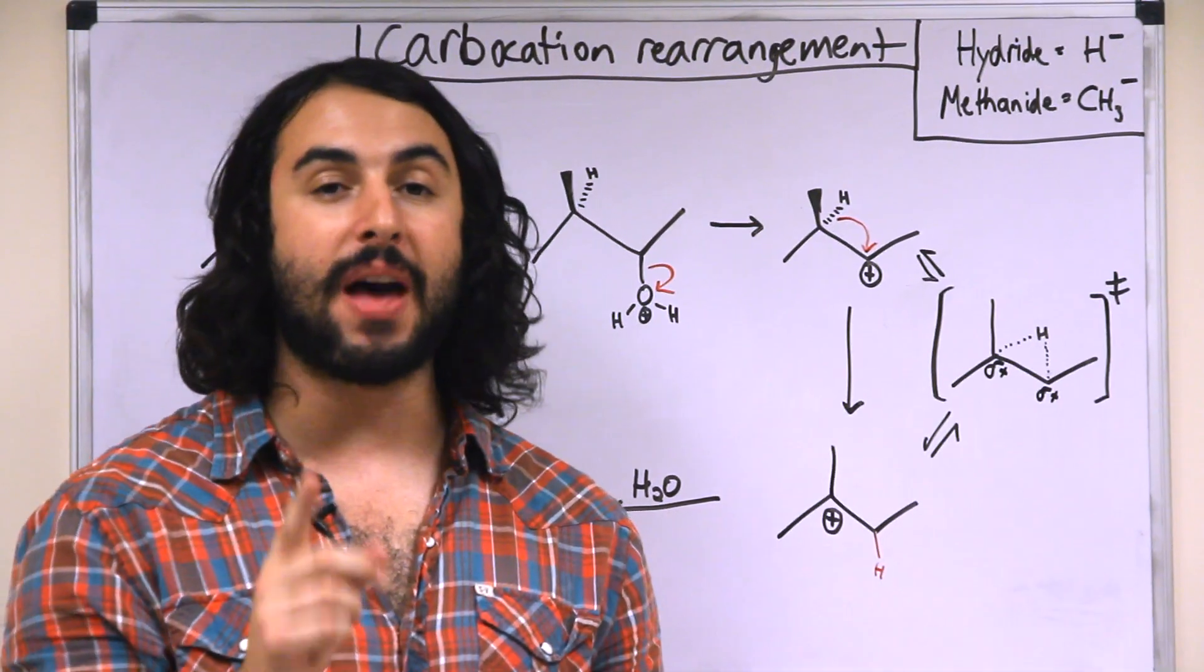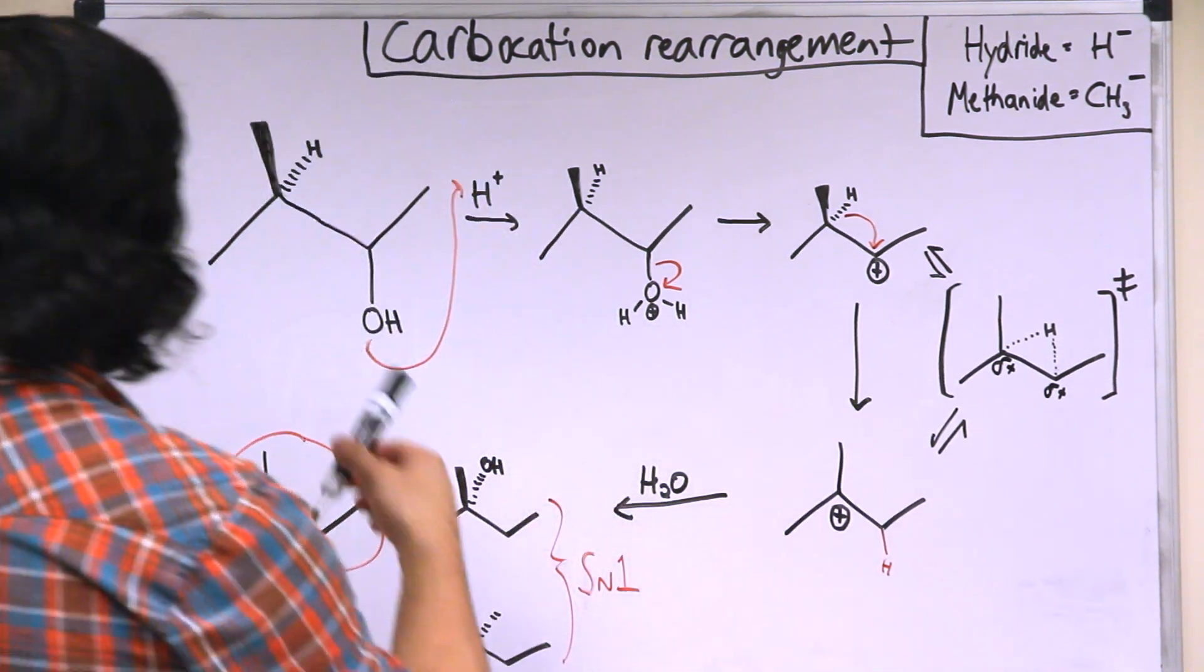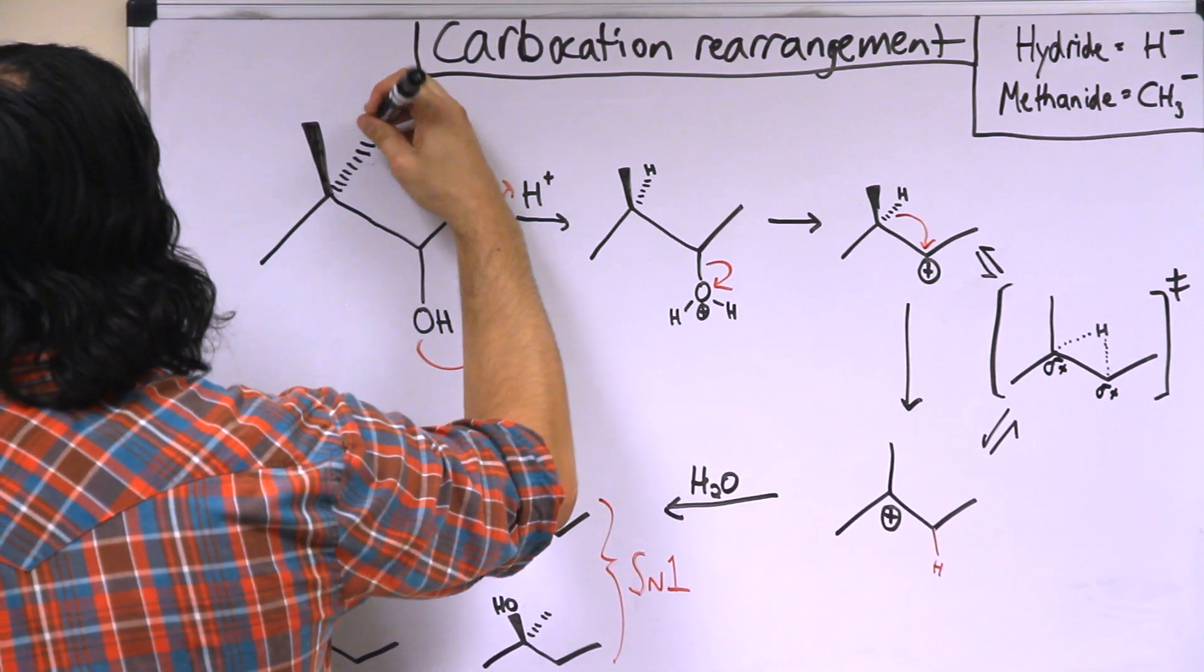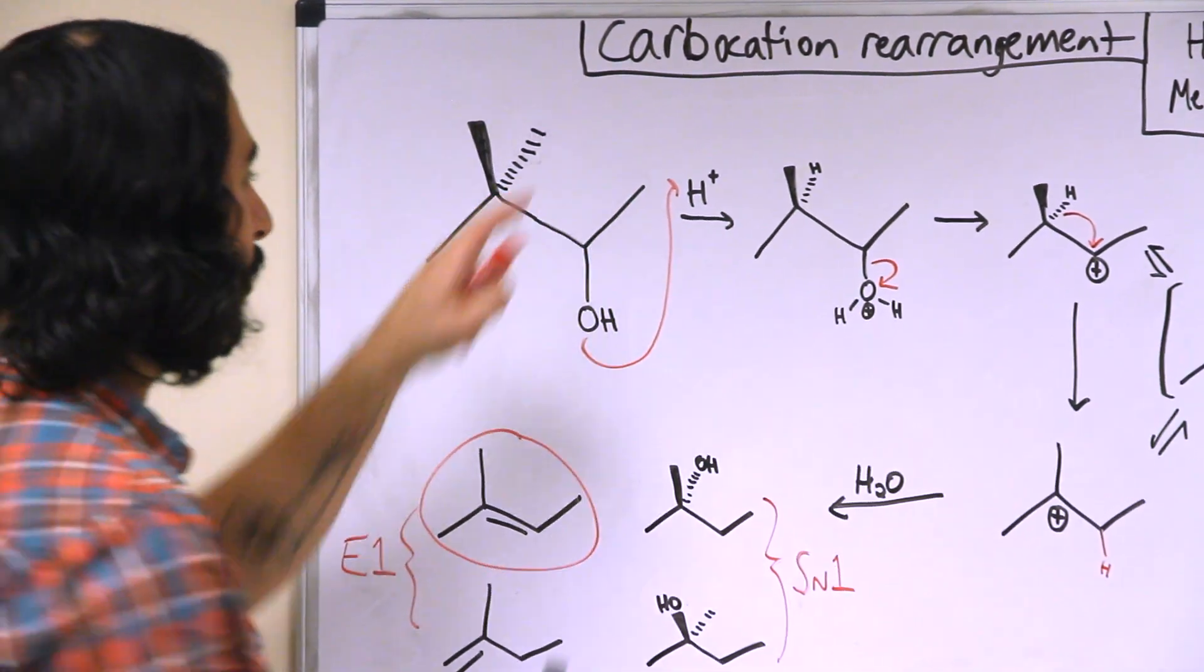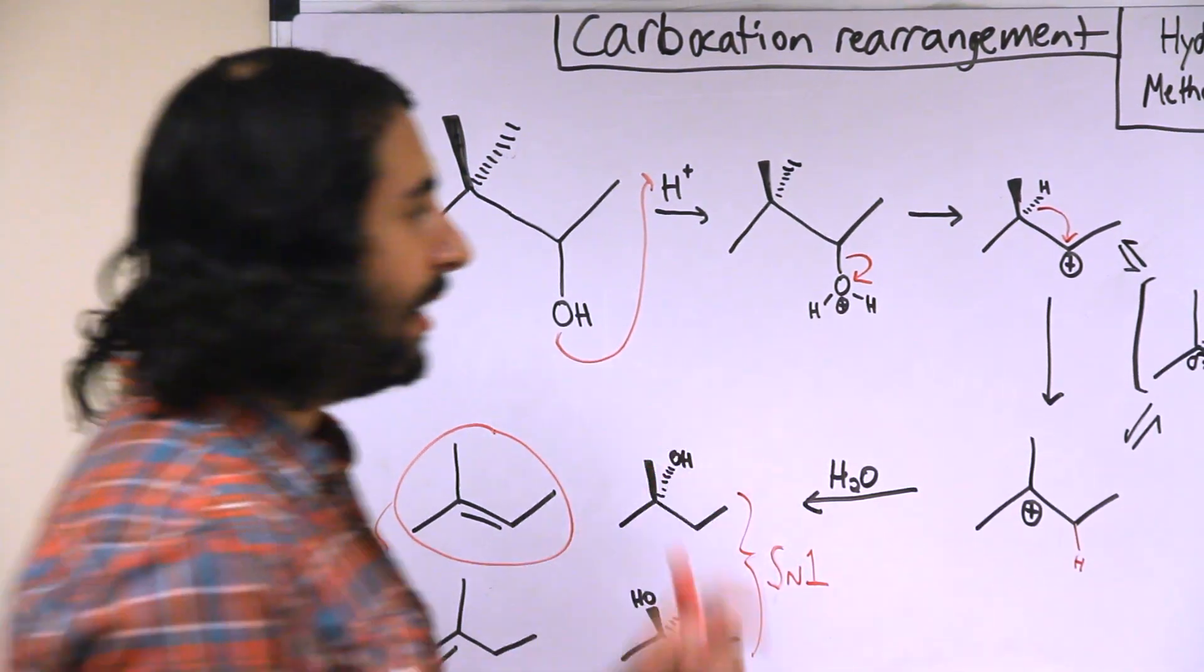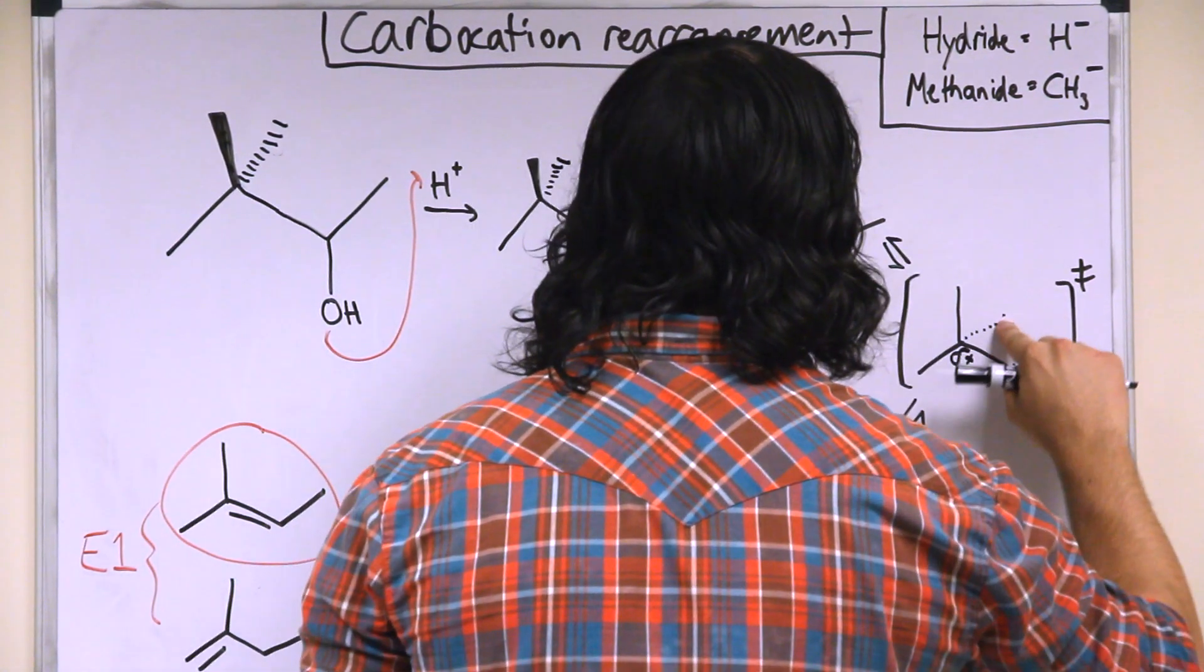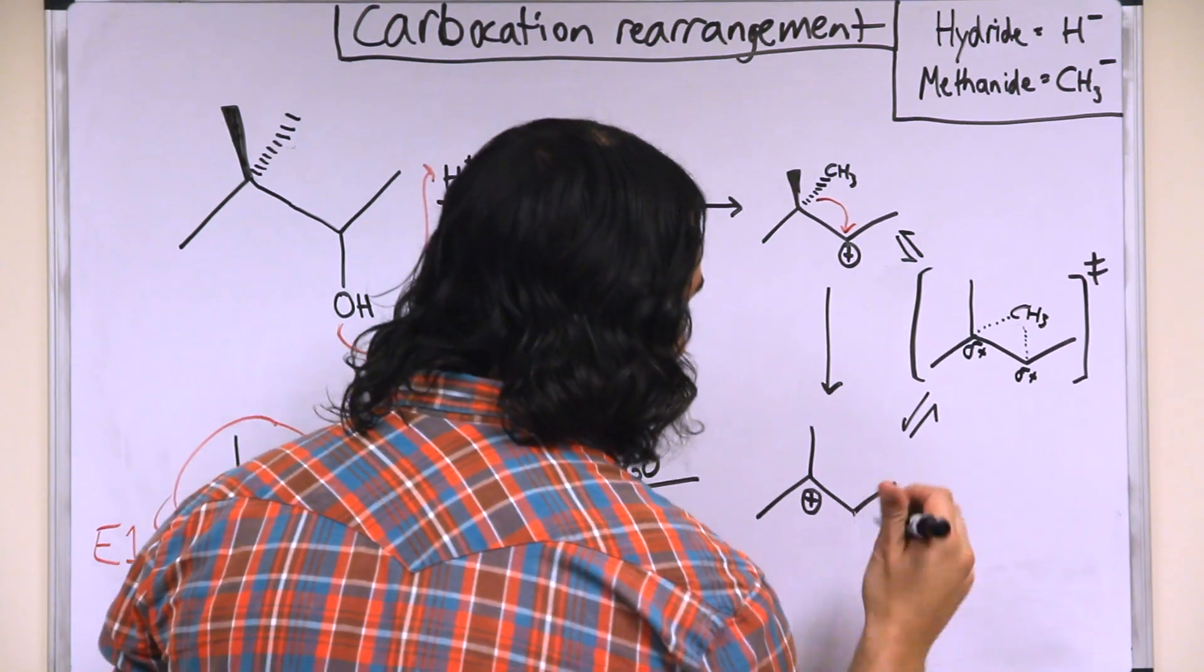Now we can also have a methanide shift. A methanide is CH3 minus. So it's a methyl group with formal negative charge. So we can just go back up here and replace all of these hydrogens. Now let's pretend this is a methyl group here. So this is no longer hydrogen. That's just a regular methyl group. So the rest is the same.